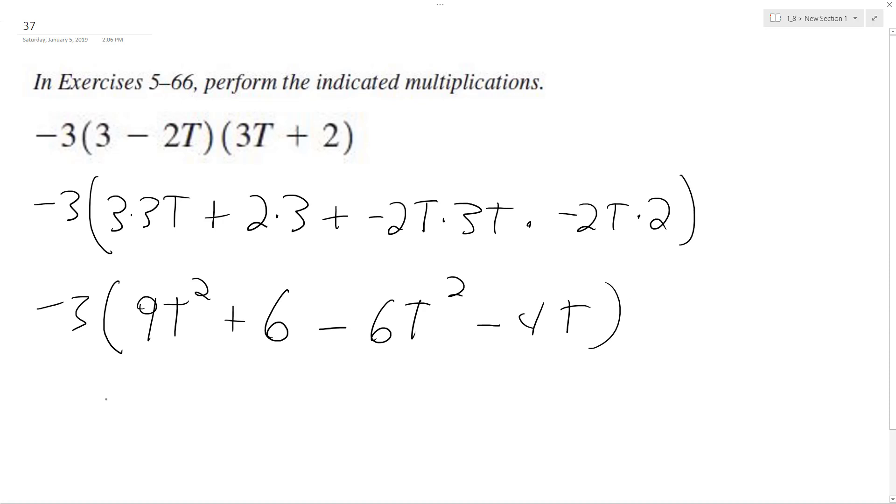So combining like terms, we end up with negative 3 times quantity 3T squared. I'll move the 4T over here, and then we have plus 6.